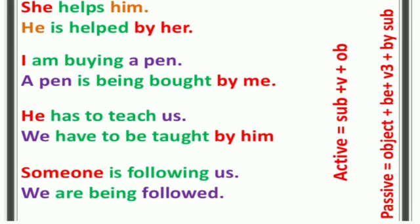Look at this. You have seen that 'following' — the continuous form — when converting, what do we say? 'Being.' Then the third form 'followed' is used. In continuous sentences, we use 'being.' Here is the formula of passive sentence given again: object plus 'be' verb plus third form of verb plus 'by' plus subject.